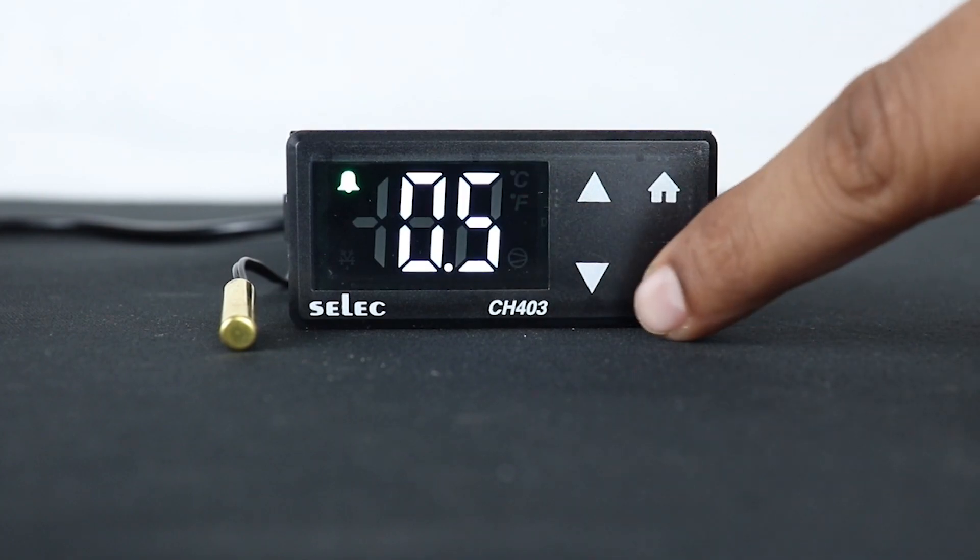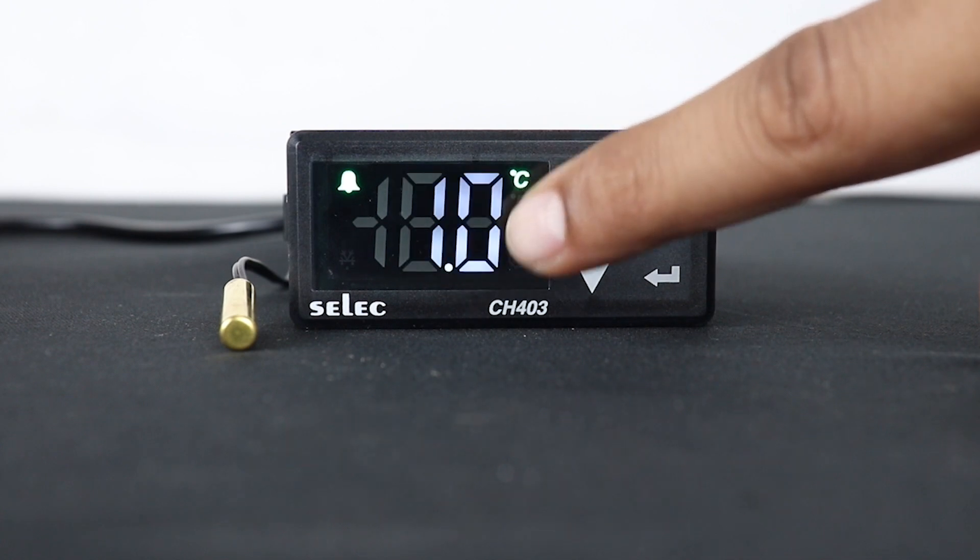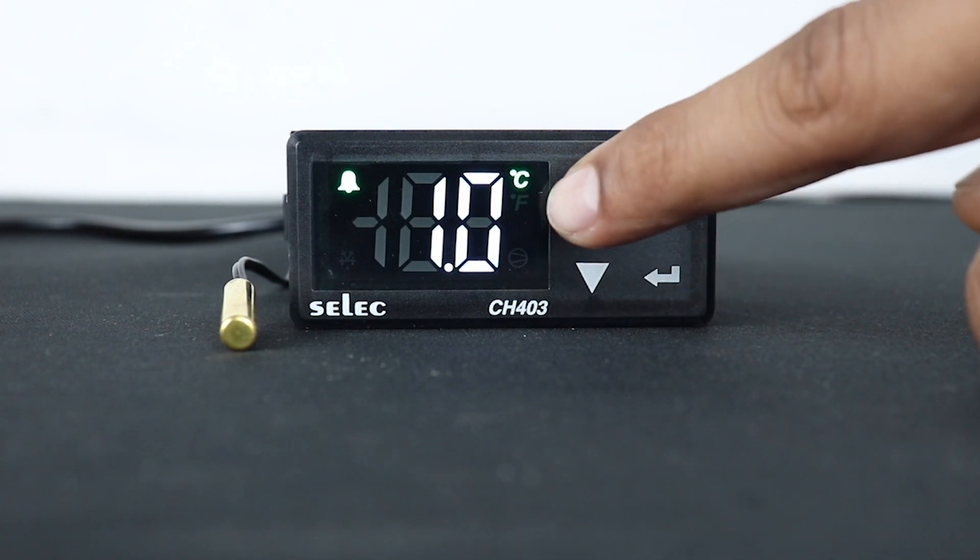P4 implies hysteresis parameter which is used to prevent frequent on-off switching of the relay around the predefined set point. Hysteresis parameter is very useful to increase compressor's life.